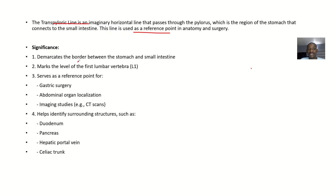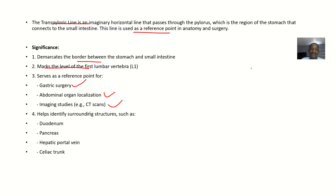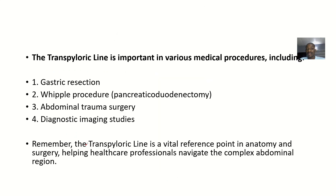The significance: it demarcates the border between the stomach and the small intestine. It is at the pylorus where the stomach is joining to the small intestine. It marks the level of the first lumbar vertebrae — that's where L1 starts from, looking at the back from the spinal cord. It serves as a reference point for gastric surgery, abdominal organ localization, and imaging studies like CT scan. It also helps you to identify structures such as the duodenum, pancreas, hepatic portal vein, and celiac trunk — you can use the pylorus to identify any of these structures in the abdomen.